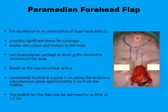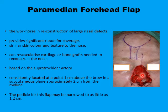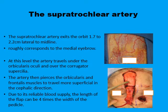The color, texture, and thickness of this skin is quite similar to the nasal skin. It has reliable vascularity, based on the supratrochlear artery, which has a consistent entrance into the flap pedicle. The flap pedicle itself can be narrowed to as little as 15 millimeters, and the flap can extend up to the hairline and sometimes beyond to provide adequate cover for the nasal defect.